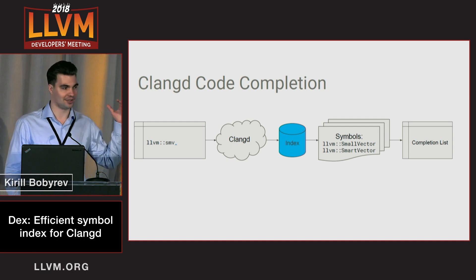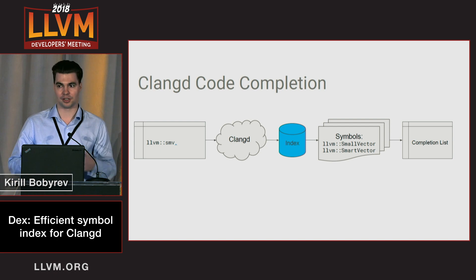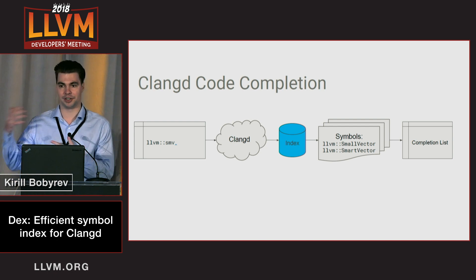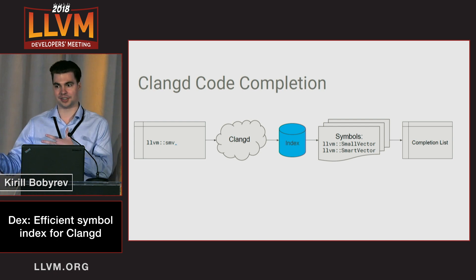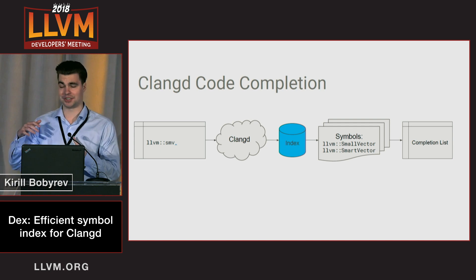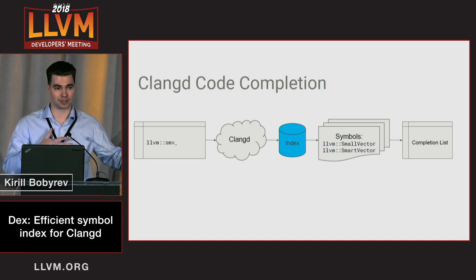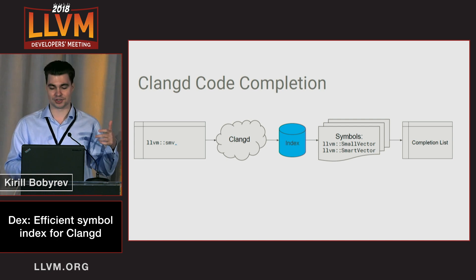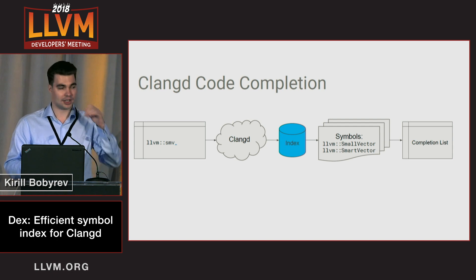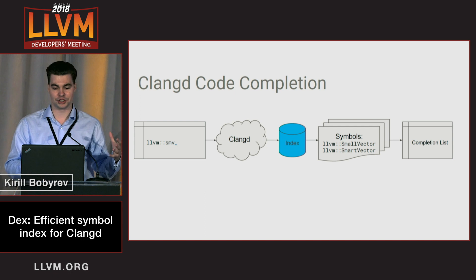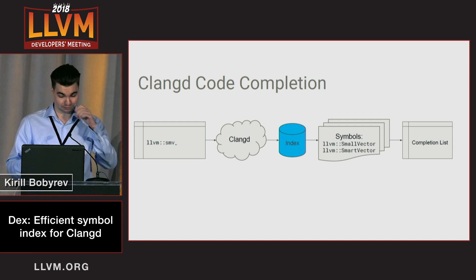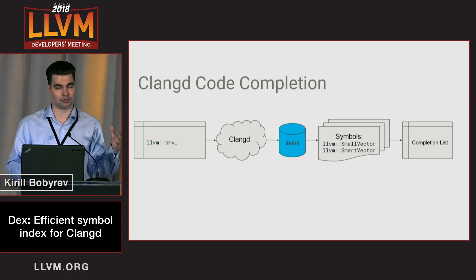The code completion pipeline starts with the user typing some text and requesting code completion through their editor. It sends a request to Clang-D, which queries the index, and this index returns a completion list which contains variables, functions, class names, and so on. The symbol index is the heart of global code completion for Clang-D, and we wanted to improve the performance.